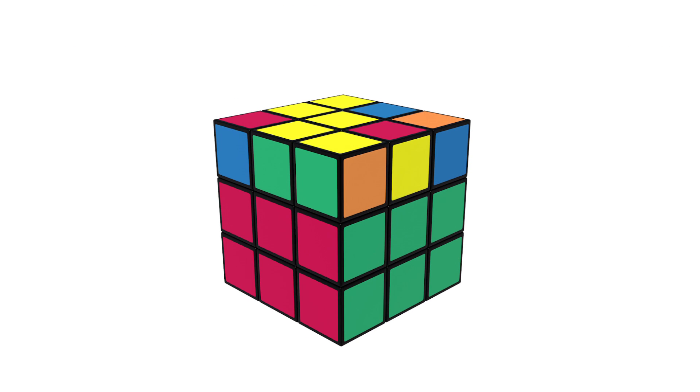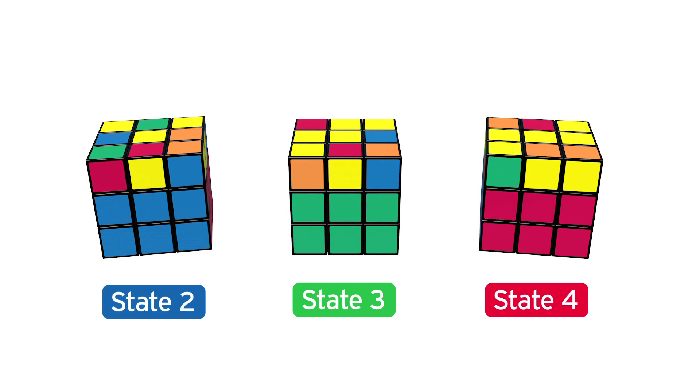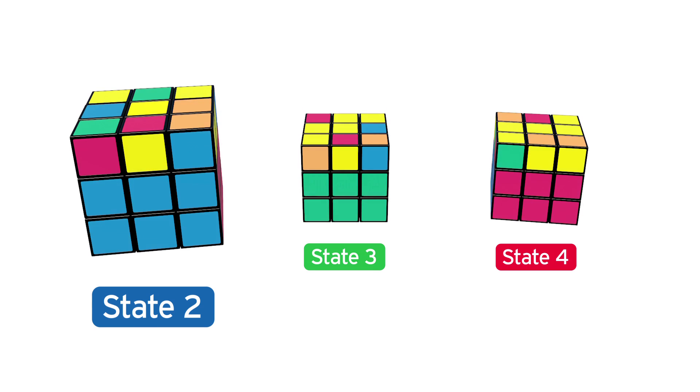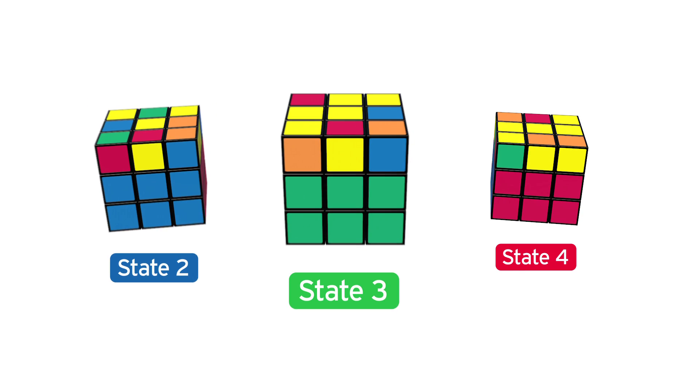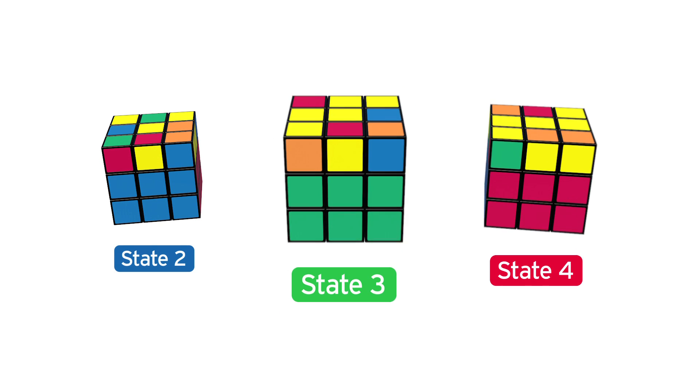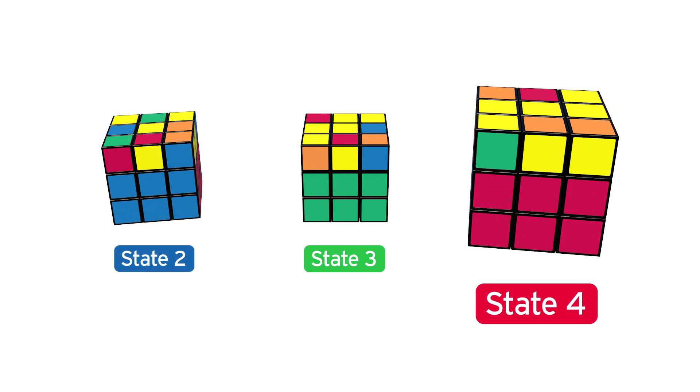Now, your cube should be in one of three possible states. State 2: no edge pieces, just the yellow centerpiece. Or State 3: two edge pieces forming a V shape, like this. Or State 4: two edge pieces forming a horizontal line with the centerpiece, like this.